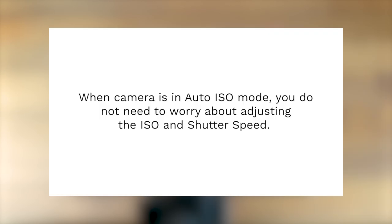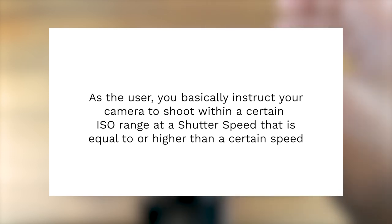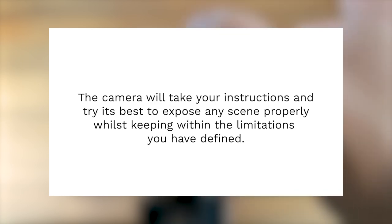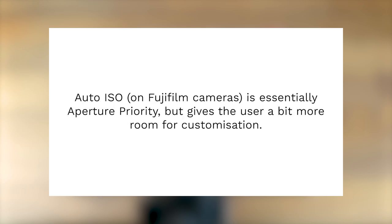So what is Auto ISO? Without being too technical, it is basically allowing your camera — the X100V in my case — to take control of the ISO value and the shutter speed to a certain extent. As the user, you need to set constraints to let the camera know to only work within those parameters you set. It is imperative you understand what ISO, shutter speed, and aperture is and how they work with one another.